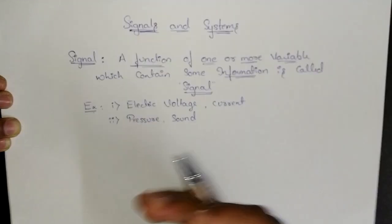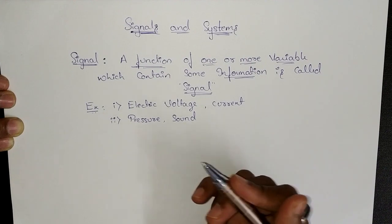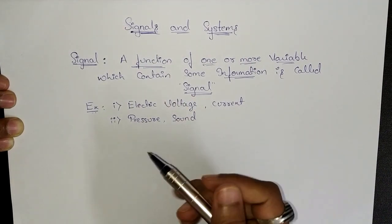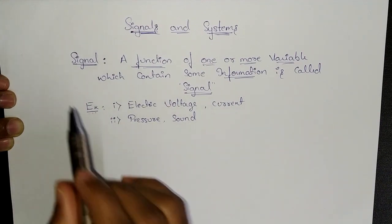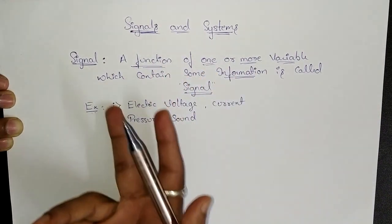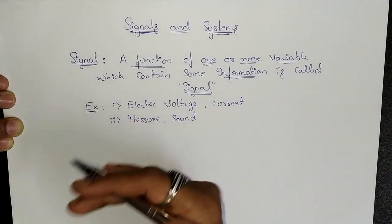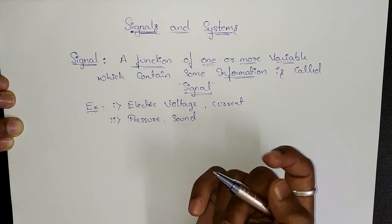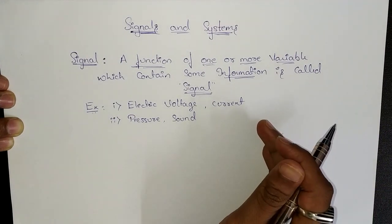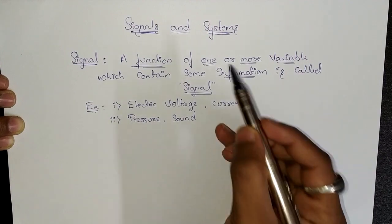Whatever noise I am making now is carrying some information regarding signals and systems — that is what a signal is. Whatever we are visualizing now also contains some information, and this is called a signal. Whatever we are transmitting now is again a signal, which is in the form of a video right now. It may be three-dimensional or multi-dimensional.